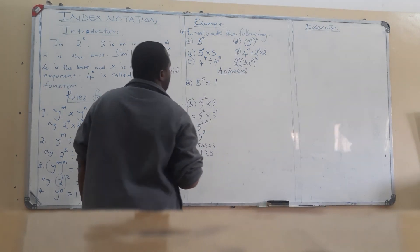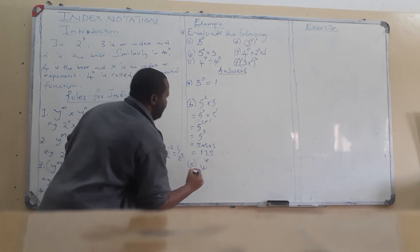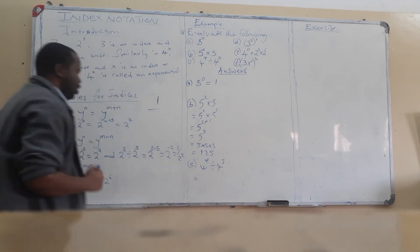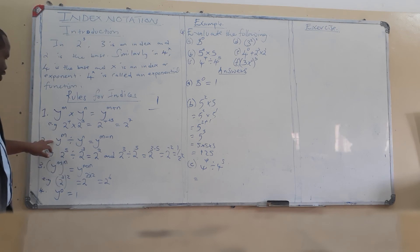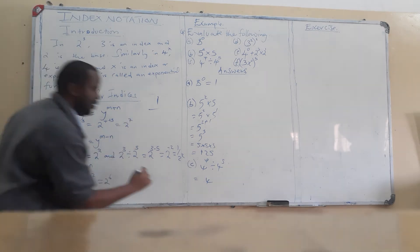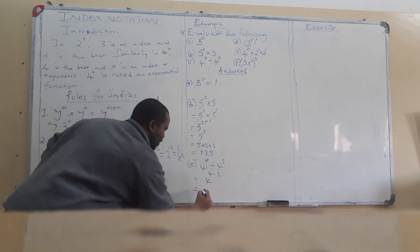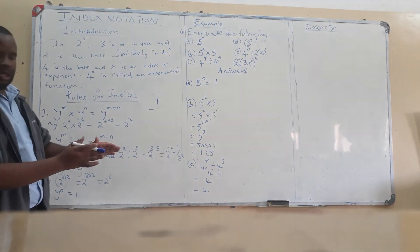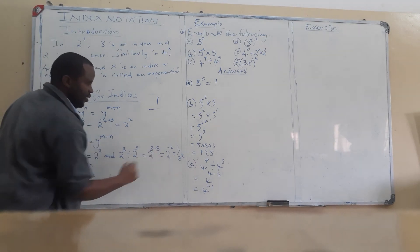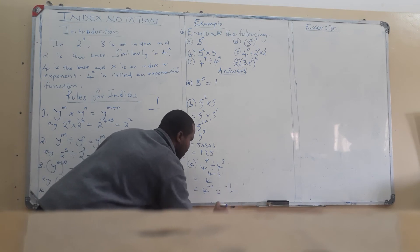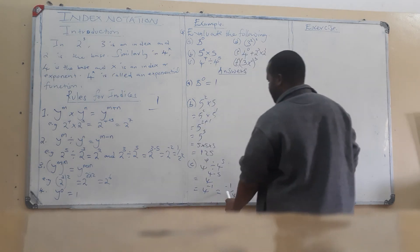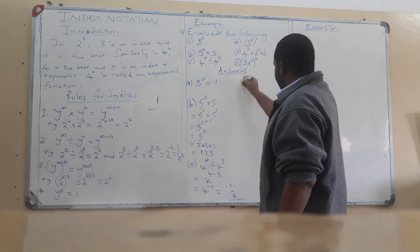For example c, we have 4 to the power 4 divided by 4 to the power 5. Pause the video and attempt the question. We apply rule number two: maintain the base of 4, then subtract the powers in the order they appear — 4 minus 5 gives negative 1. So the answer is 4 to the power negative 1, which means 1 over 4.